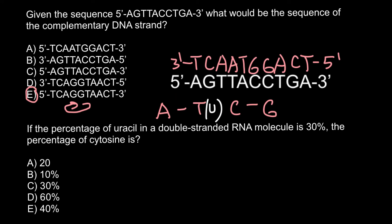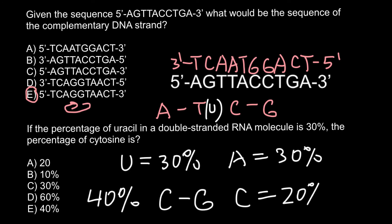So if uracil equals 30%, then we know that it always base pairs with adenine. We know that the quantity of adenine also equals 30%. If we know the frequency of uracil and adenine, which is 60%, that gives us information that the rest, 40%, would be cytosine and guanine. And basically, cytosine would equal 20% and guanine also would equal 20%.